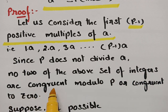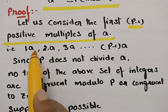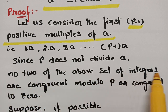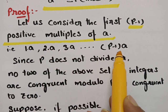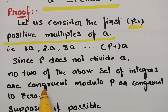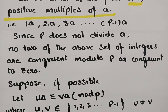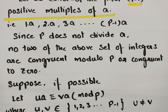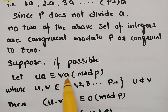No two of the above set of integers are congruent modulo p, or congruent to 0. Since these two conditions hold, no two of the above integers are congruent modulo p or congruent to 0. To verify, suppose we take two multiples of a and consider them congruent modulo p.